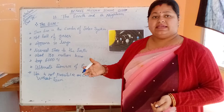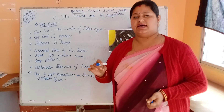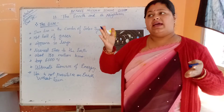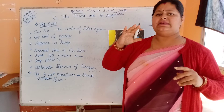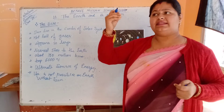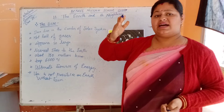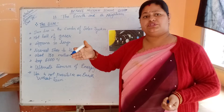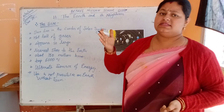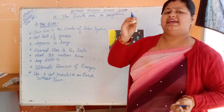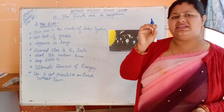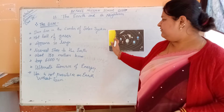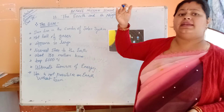Sun is the nearest star to us. It appears as a very large, huge ball shape and you can see it with open eyes. But you cannot see other stars so clearly because stars are situated much farther away from us, making them visible only as sparkling points. We cannot identify the real structure of a star, but we can identify the structure of the sun because it is the nearest star.